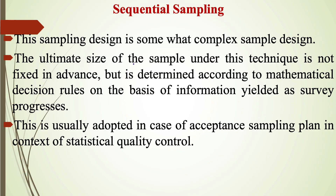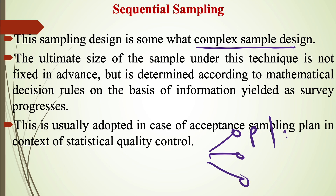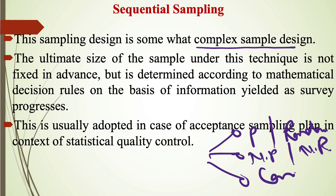So what is sequential sampling? Basically, it is a type of complex sample design. As discussed in previous videos, there are three types of sampling: probability or random sampling, non-probability or non-random sampling, and complex sampling. Complex sampling is a mixture or combination of probability and non-probability sampling. So sequential sampling is a type of complex sample design — it includes few features of probability sampling and few features of non-probability sampling.